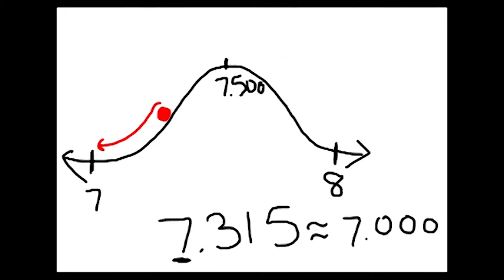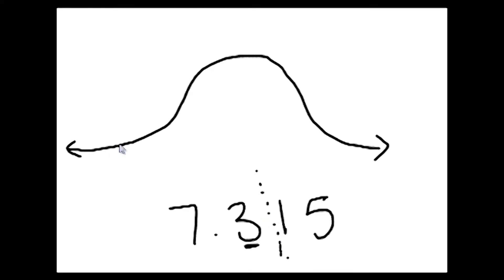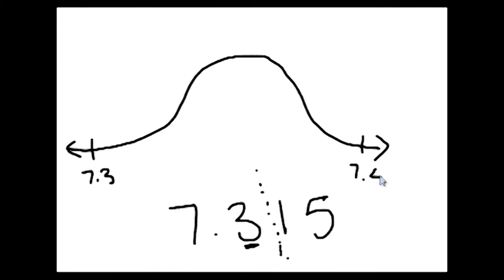Now we can take the same number and round it to a different place value position. We can take seven and 315 thousandths, and this time we're going to round it to the nearest tenth. So we're going to think about which two tenths seven and 315 thousandths is between. It's between seven and three tenths on the low end, and seven and four tenths on the high end.